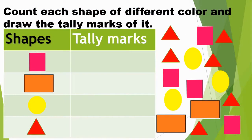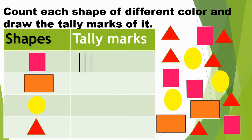Now students, in this example, count each shape of different color and draw the tally marks for it. We have shapes like square, rectangle, circle, and triangle. First we will count how many squares there are: 1, 2, 3, 4. There are 4 squares. So how many tally marks will I draw? Yes — 1, 2, 3, 4. I will draw 4 tally marks.